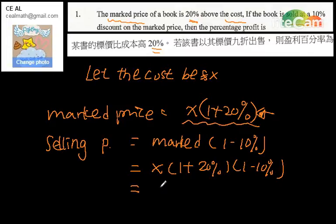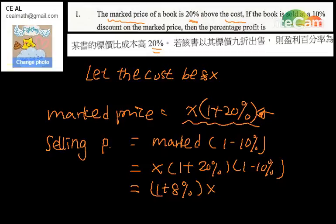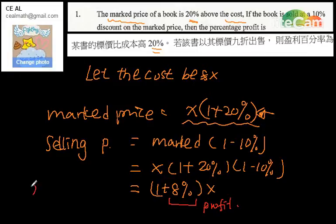So after our calculation, we find out the answer is X multiplied by 1.08, which means the selling price is 1 plus 8% of X. So the answer is 8% for the percentage profit.